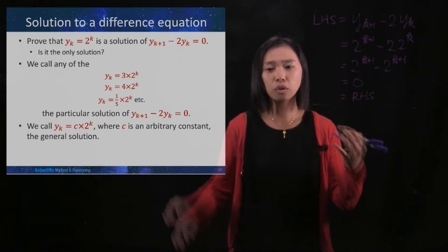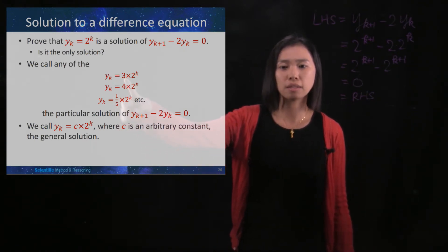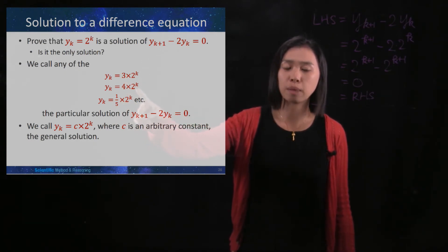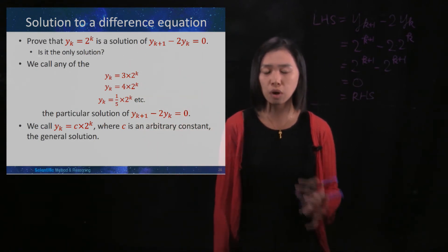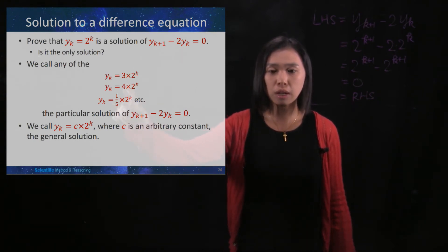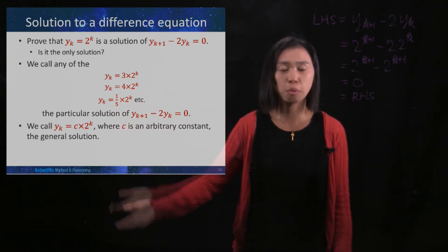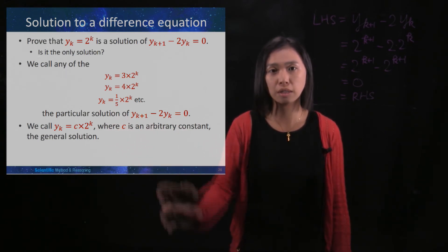And then you may also check that yk is 1,000 times 2 to the power of k, yk is 0.1 times 2 to the power of k. All of these would also be a solution to this. And then we call them things with a fixed number. So here like 3, 4, 1 fifth or 1,000 or 0.1 with a fixed number, we call them the particular solutions of this, right?